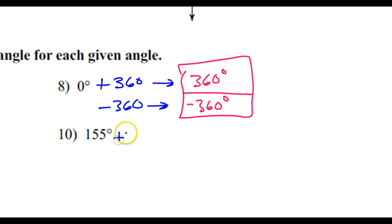Number 10, if I do plus 360 and minus 360, that's going to give me 515 degrees and negative 205 degrees.